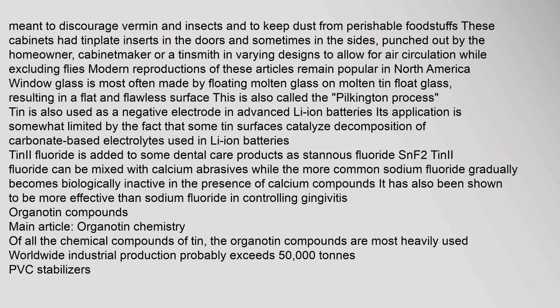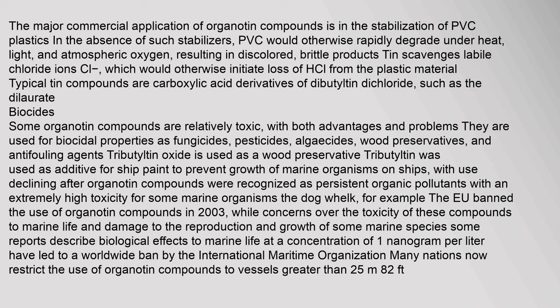Of all chemical compounds of tin, the organotin compounds are most heavily used; worldwide industrial production probably exceeds 50,000 tons. The major commercial application of organotin compounds is in the stabilization of PVC plastics. In the absence of such stabilizers, PVC would rapidly degrade under heat, light, and atmospheric oxygen, resulting in discolored, brittle products. Tin scavenges labile chloride ions (Cl-), which would otherwise initiate loss of HCl from the plastic material. Typical tin compounds used are carboxylic acid derivatives of dibutyltin dichloride.